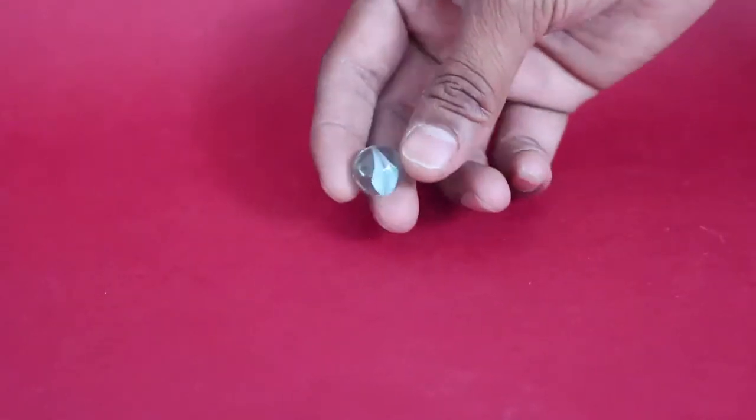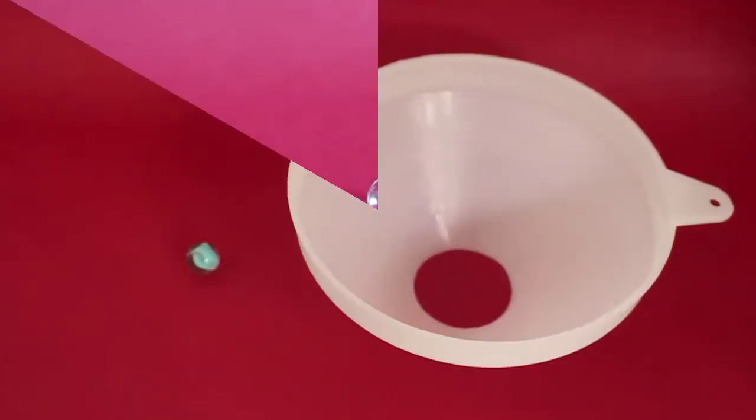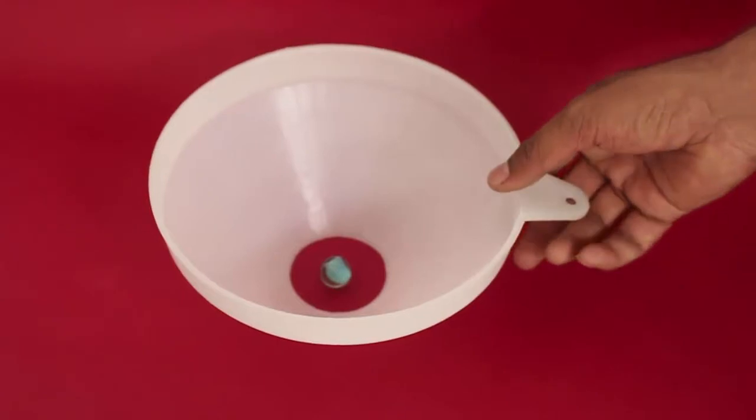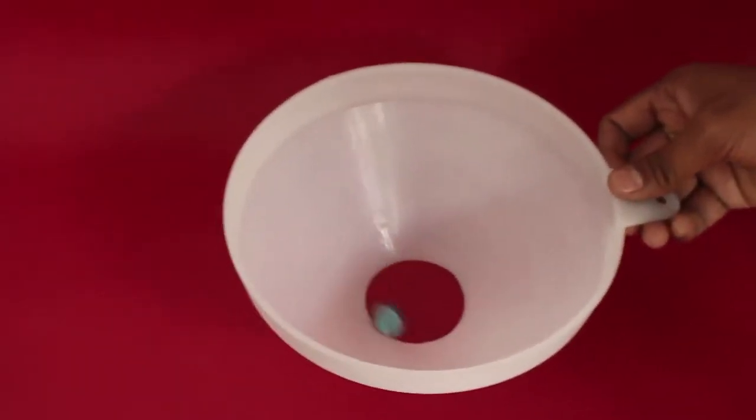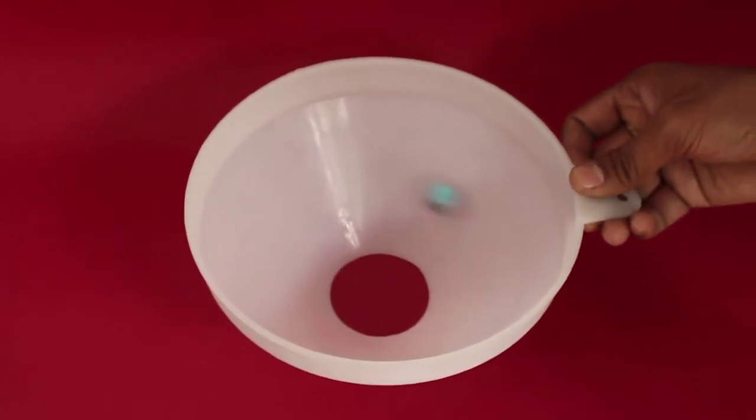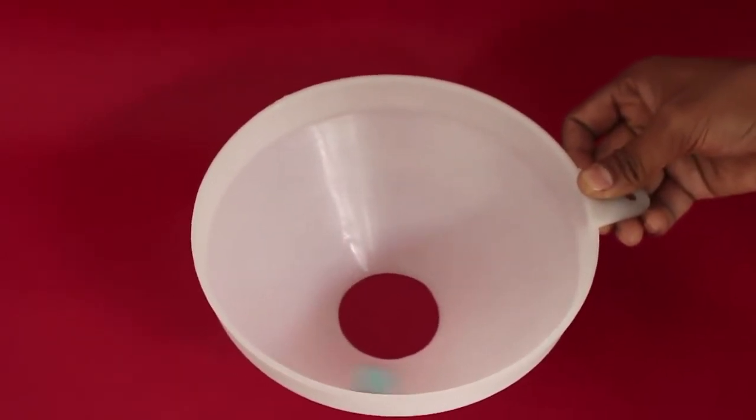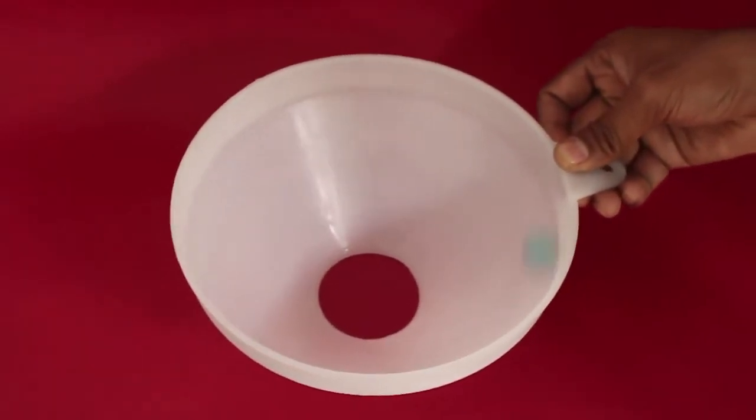Now you are supposed to lift the marble from the table without touching the marble with your hand. For this, place the cut funnel on the marble and then slowly rotate the funnel. The marble will spin around and round in the funnel and it will slowly tend to rise and fly away.